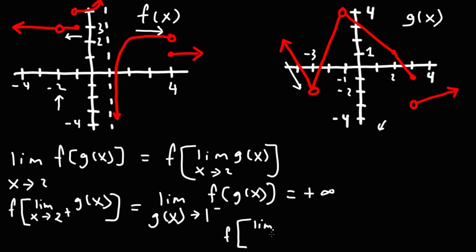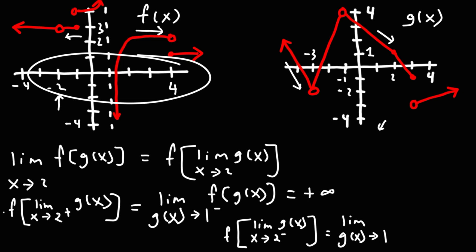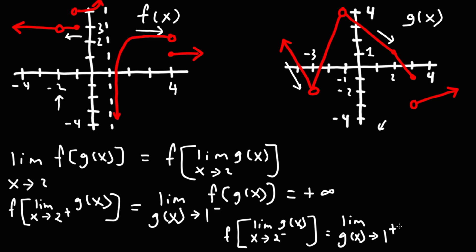Now let's check the other side. Let's find f of the limit as x approaches 2 from the left of g of x. As we approach the x value of 2 for the function g from the left side, we still get the limit as g of x approaching positive 1. But notice that we're coming from above. As we approach the y value of 1 from above, when we translate it to f of x, it's the same as approaching from the right side — we're going to 1 from higher values: y is 2, then 1.5, then 1.1, then 1. So we're going from the right side of 1.